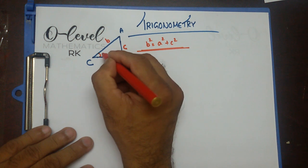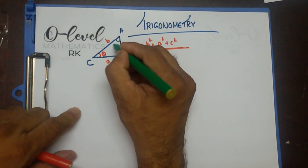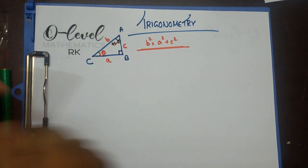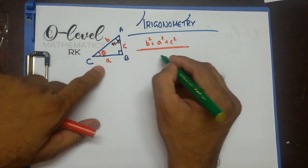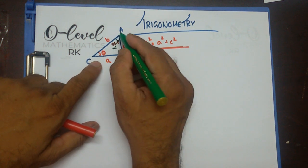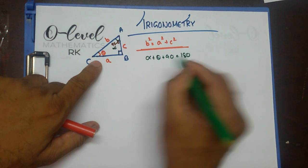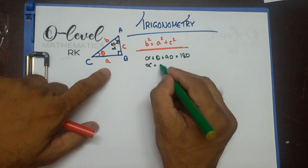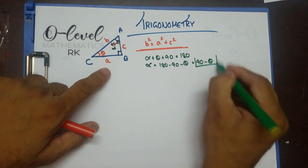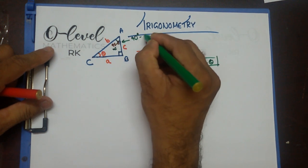Now, think of this angle as theta. If this angle is theta and this is 90 degrees, then this other angle is going to be 90 degrees minus theta. Why? Let's call this angle alpha. According to the angle sum of a triangle: alpha plus theta plus 90 degrees equals 180 degrees. So alpha equals 180 minus 90 minus theta, which gives 90 minus theta.